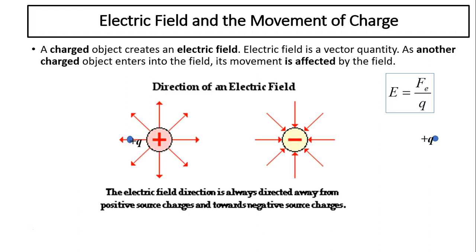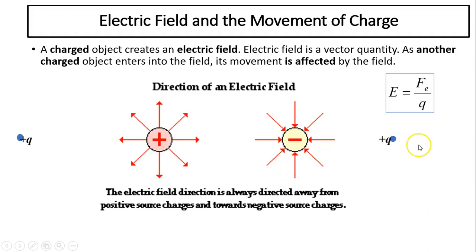Electric field and movement of charge. Charged objects create an electric field, and this electric field is a vector quantity — it affects any other charge that enters the field. For example, if you have a positive charge and place it next to another positive charge, it's going to be repelled away. If you put a positive charge near a negative charge, it's going to be moved toward it. The field created by positive or negative charges has an effect on any charge placed in the field. Here is the equation relating field strength, the charge, and the force on the charge.